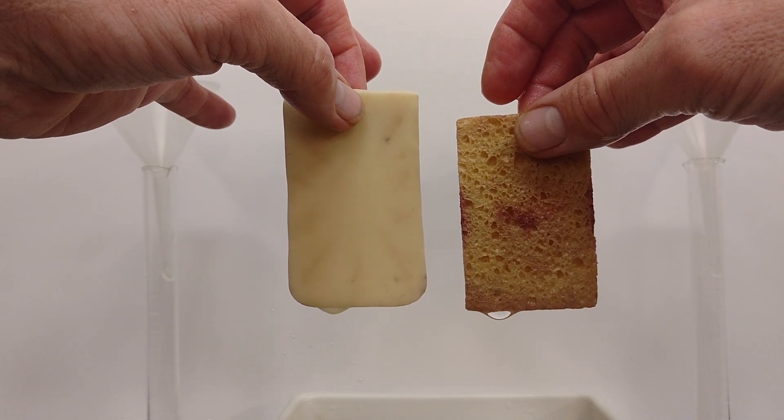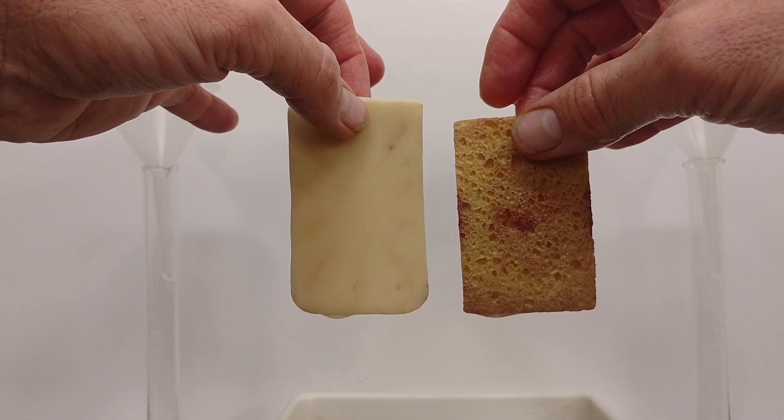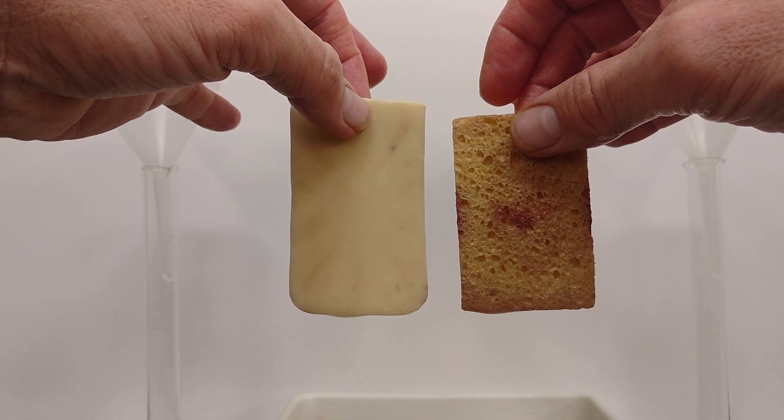The water flows more rapidly from the sponge with the larger pores. At some point the water will stop flowing from both sponges.